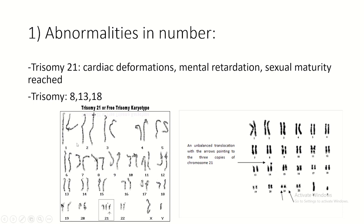The well-known trisomy is trisomy 21, which causes Down syndrome. The individual would have cardiac deformations and mental retardation, although sexual maturity is reached. In trisomy 21, there are three copies of chromosome 21. In certain cases, the third copy is translocated to chromosome 14, so the karyotype may look normal at first glance.